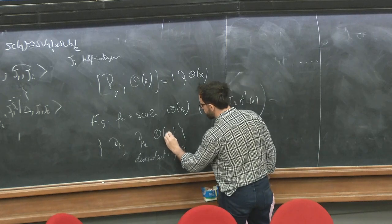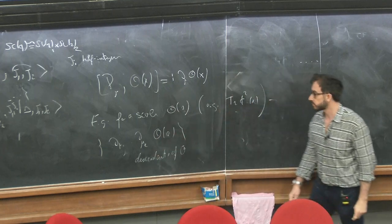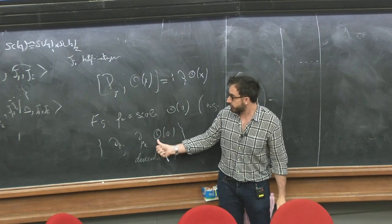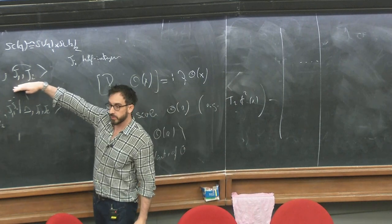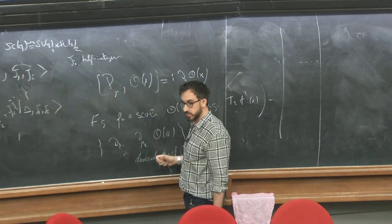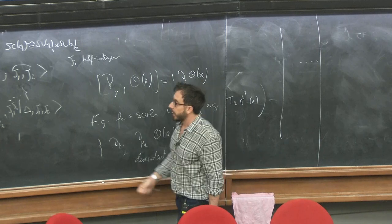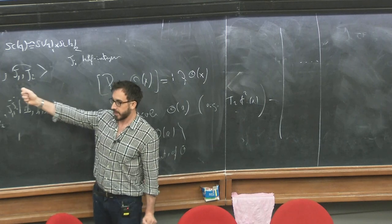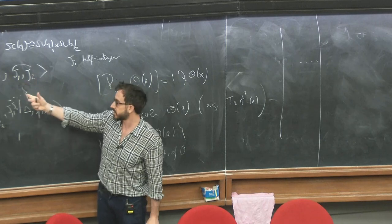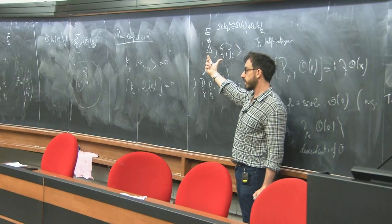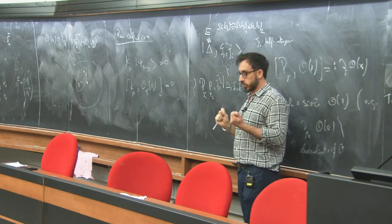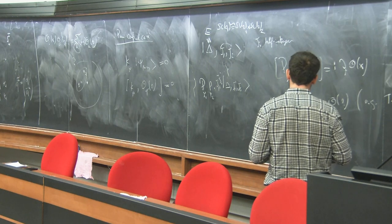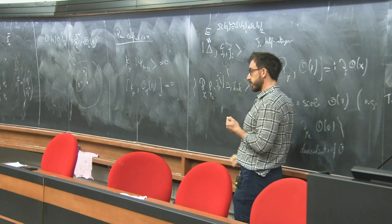States that have a nonzero number of derivatives are called conformal descendants of O. This operator should be placed at the origin, and that is the full module. For a generic choice of quantum numbers, this module is irreducible. But — and this is a phenomenon that becomes more involved in the superconformal case — if you suitably tune these quantum numbers, the module becomes reducible, and you get shorter representations if you impose suitable conditions.